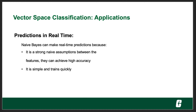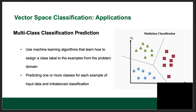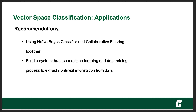It is also pretty simple and trains quickly. We can also do multi-class classification prediction, using machine learning algorithms that learn how to assign a class label to examples from the problem domain, or predicting one or more classes for each example of input data.